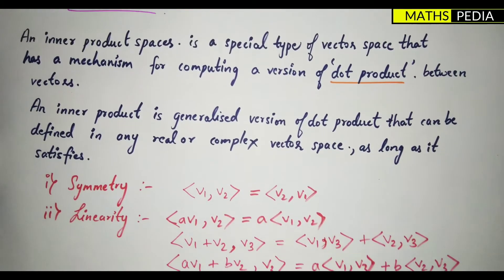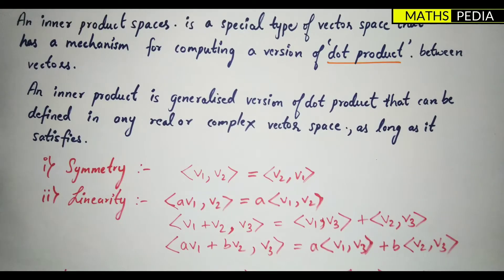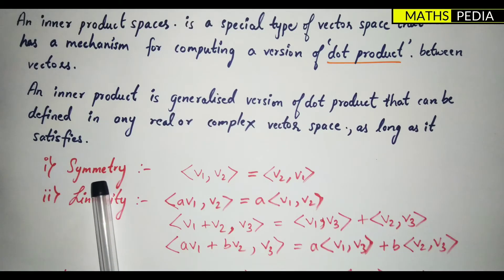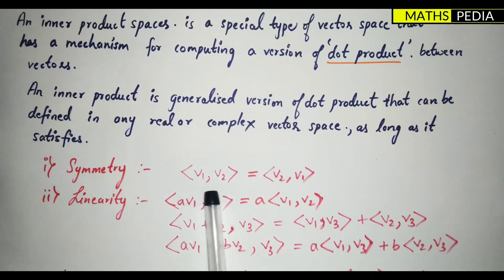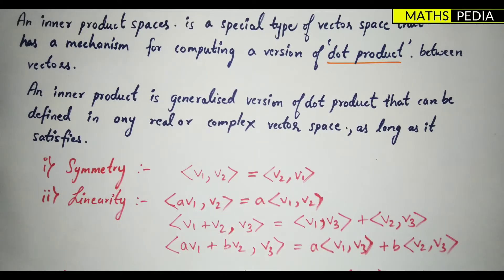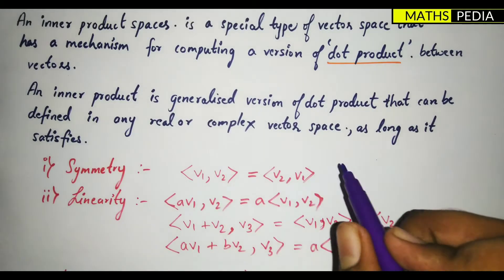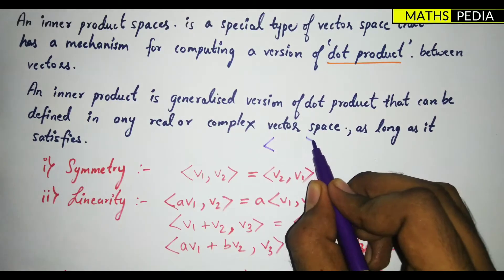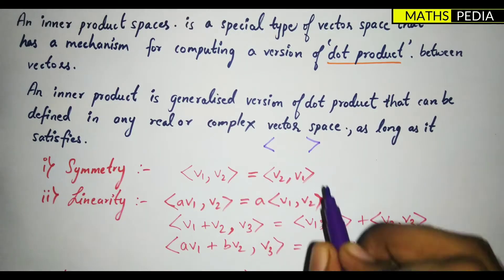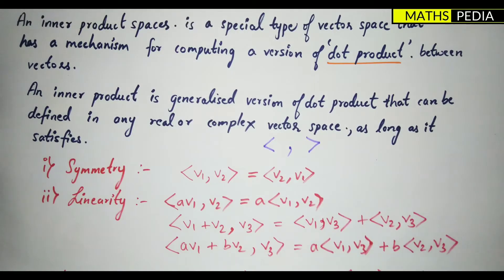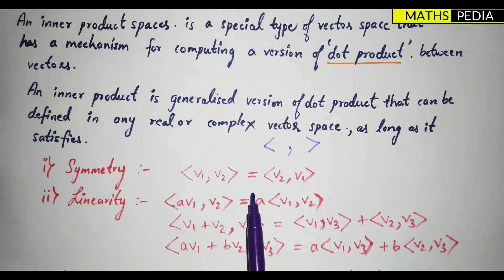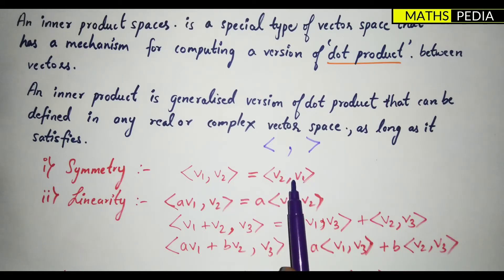There are three conditions to be satisfied for the inner product. The first one is symmetry, also called conjugate. Taking two vectors v1 and v2, the inner product is represented using angle bracket symbols with a comma between vectors. The inner product of v1 and v2 is equal to the inner product of v2 and v1 — that is symmetry, or the conjugate of the vectors.